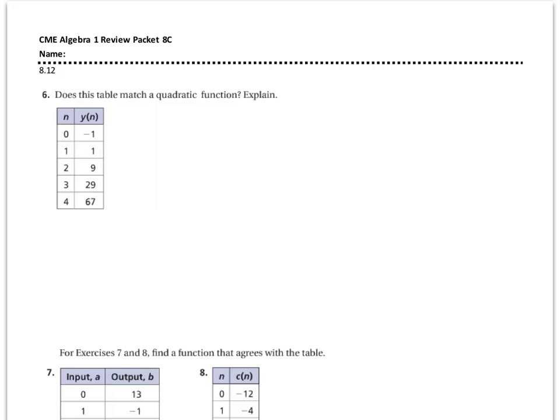Number 6: does this table match a quadratic function? Theorem 8.6 says if the second difference is constant, then it is a quadratic.